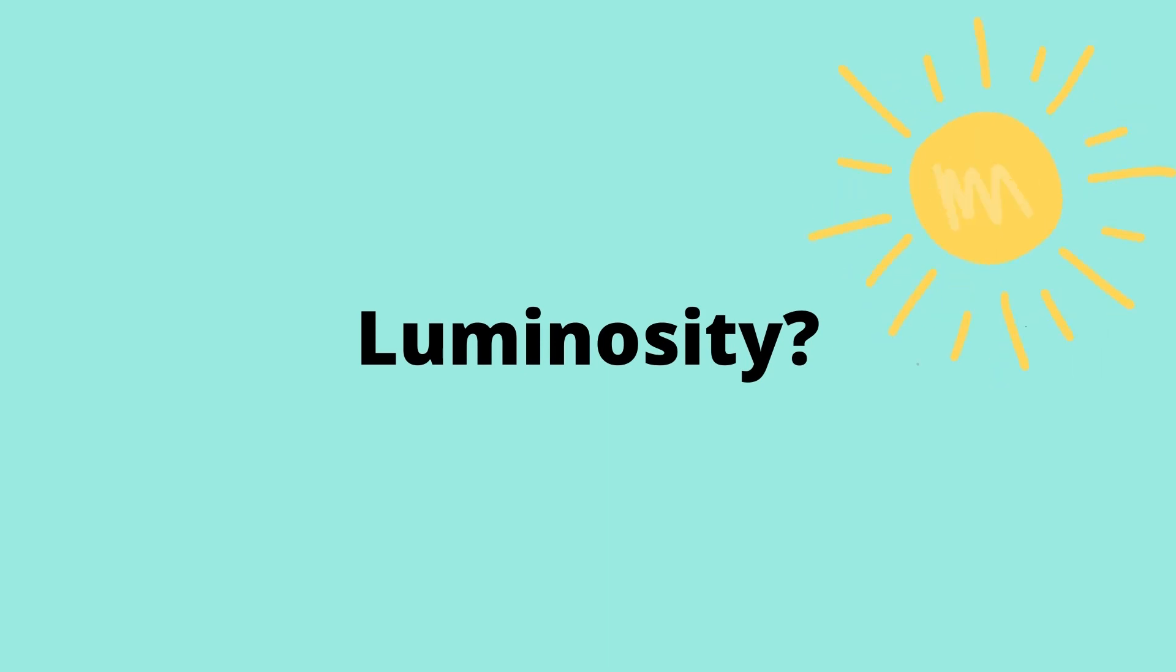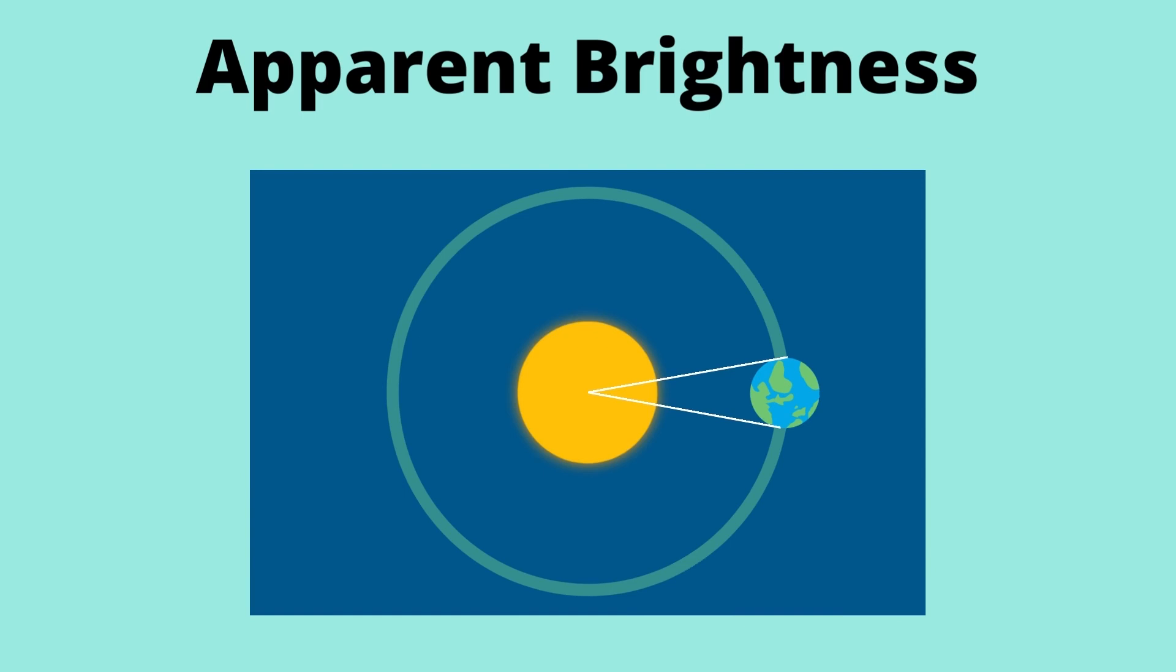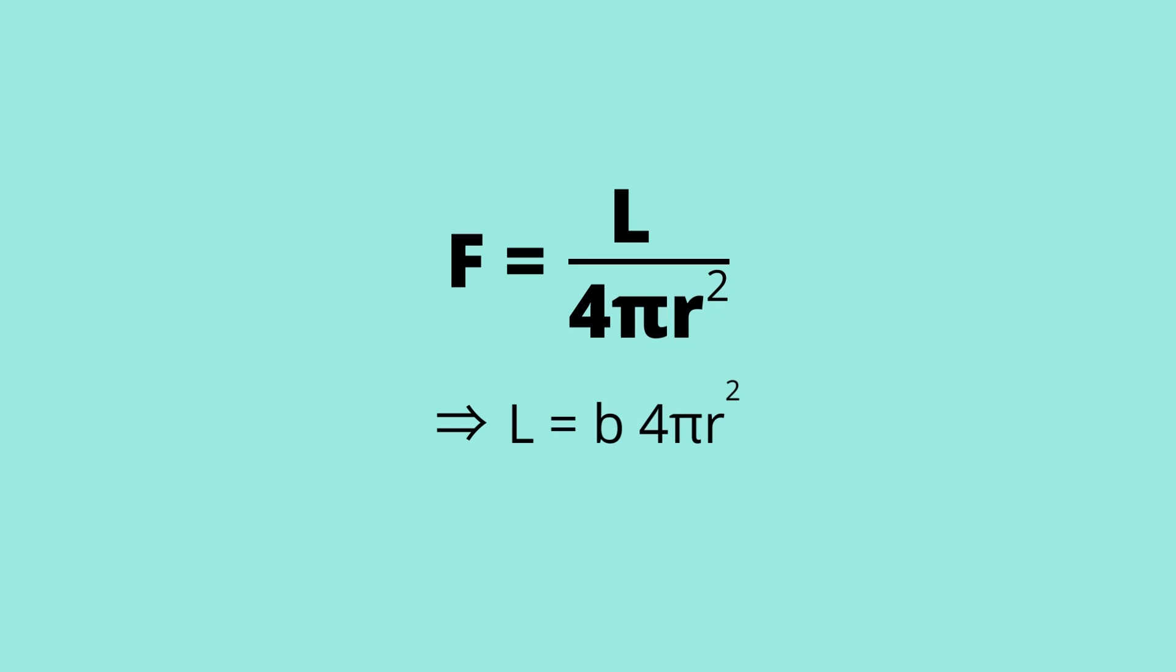We discussed earlier that the energy produced through nuclear fusion is then converted to heat and light. The light or the electromagnetic energy is what we see. This energy makes the sun luminous. But how do we calculate this luminosity? Actually we refer to something called apparent brightness. Apparent brightness is nothing but the amount of brightness that we observe from the surface of the earth. It is also known as flux.